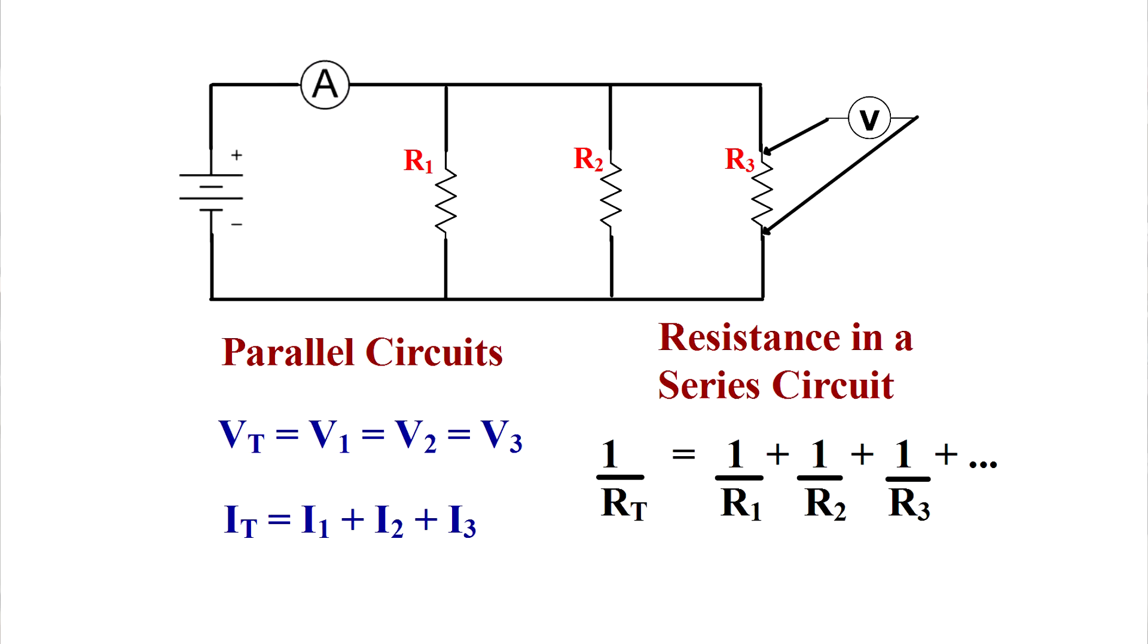For a parallel circuit, the reciprocal of the total resistance of a circuit is equal to the sum of the reciprocals of the resistances of each branch. Still fairly simple, but that's a little bit more work.